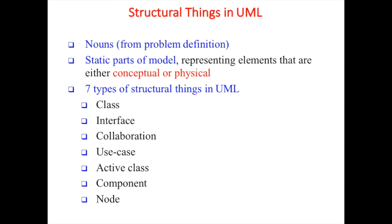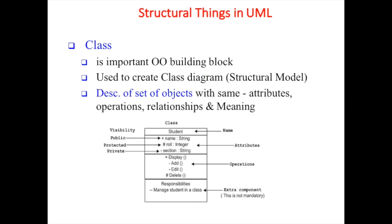Let's go deeper into these four things. Starting with structural things - these are the noun from the problem definition, the static part of a model representing elements that are either conceptual or physical. There are seven types of structural things in UML. Let's start with class - class is an important object-oriented building block used to create a class diagram or structural model, providing a description of a set of objects.